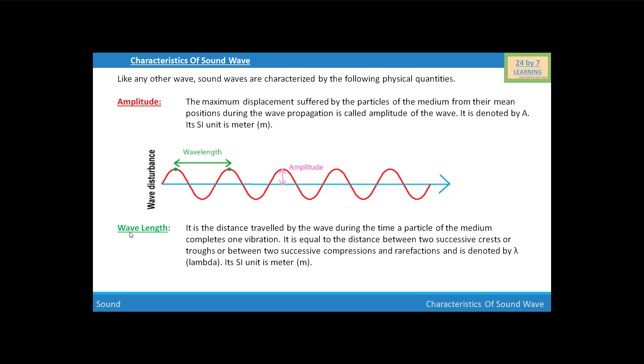Next, we are going to discuss wavelength. What is wavelength? It is the distance traveled by the wave during a time a particle of the medium completes one vibration. It is equal to the distance between two successive crests or troughs, or between two successive compressions or rarefactions. It is denoted by lambda and its SI unit is meter.